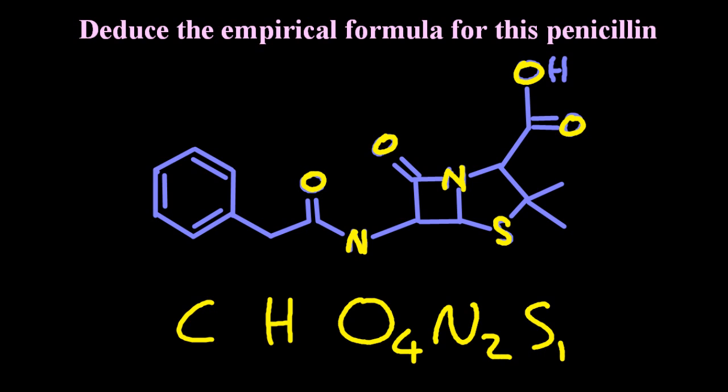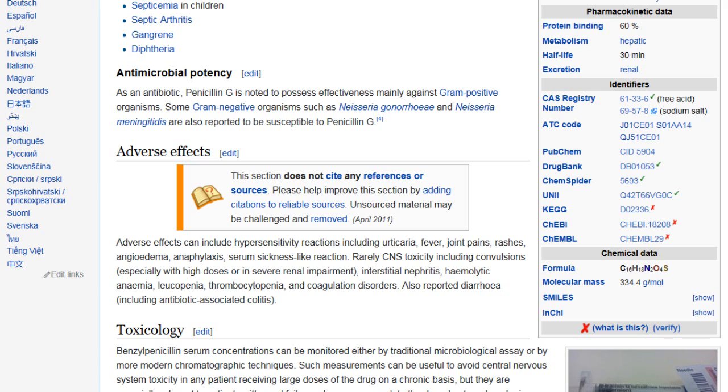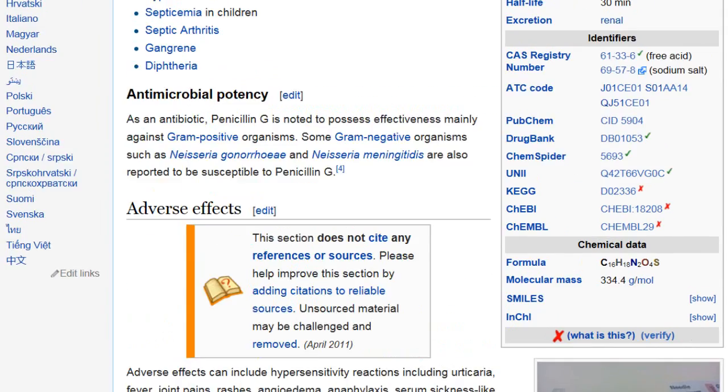Now that benzene ring has six carbons. It could also have a ring inside it. There's two ways to show benzene. And totting all those up, I'm going to get 16. Now, what about the hydrogens? Oh, let me just check Wikipedia. Is it 16 carbons? Yes. Alrighty.